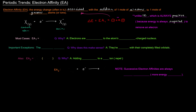With electron affinity, in most cases the first electron affinity is negative. That means energy is released when an electron is added to an atom. Why would that be? Well, electrons are attracted to the atom's positively charged nucleus, so it's somewhat favorable when an electron comes in towards a positive charge.